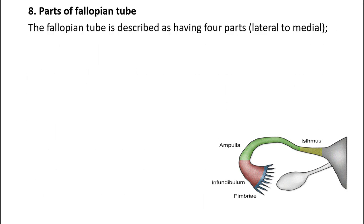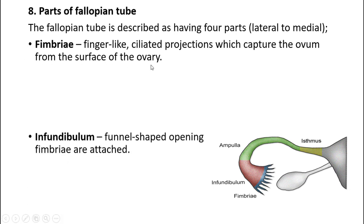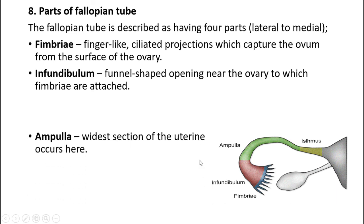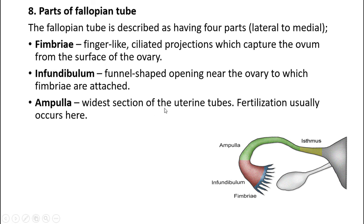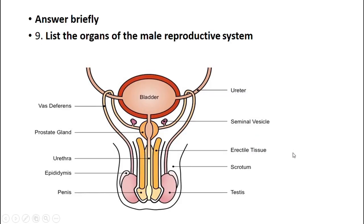Parts of the fallopian tube. The fallopian tube is described as having four parts. First is the fimbriae — finger-like projections which capture the ovum from the surface of the ovary. Then the infundibulum — the funnel-shaped opening near the ovary to which the fimbriae are attached. The ampulla is the widest section of the uterine tube, where fertilization usually takes place. The isthmus is the narrow section connecting the ampulla to the uterine cavity.